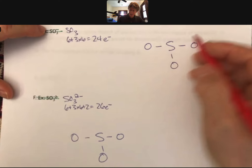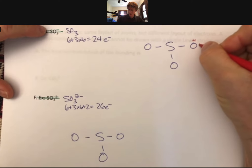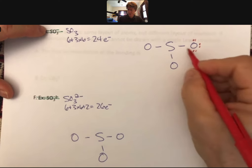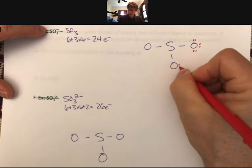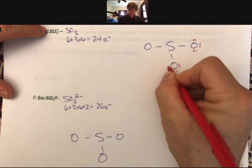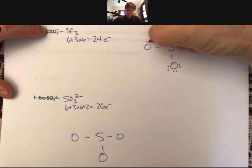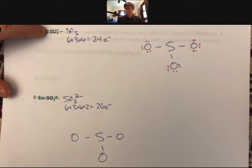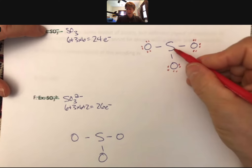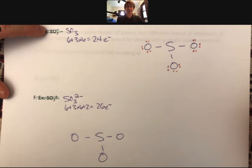Here I've got 2, 4, 6, 8, 10, 12, octet, 14, 16, 18, 20, 22, 24. I do not have enough electrons to get to my central sulfur.